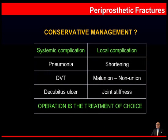What about conservative treatment for periprosthetic fractures? We know that these patients are elderly and have multiple comorbidities. Systemic complications of conservative treatment include pneumonia, DVT, and decubitus ulcers. Local complications include shortening, malunion, nonunion, and joint stiffness.